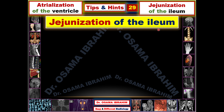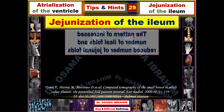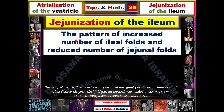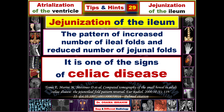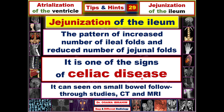The jejunization of the ilium represents the pattern of an increased number of ilial folds and a reduced number of jejunal folds — in other words, a reversal of the normal fold arrangement between the ilium and jejunum. This pattern is one of the most famous signs for diagnosing celiac disease, and it can be identified on small bowel follow-through studies, CT, and MRI.